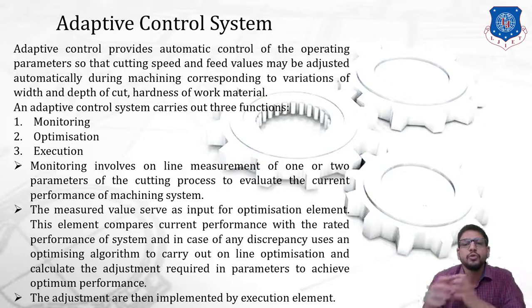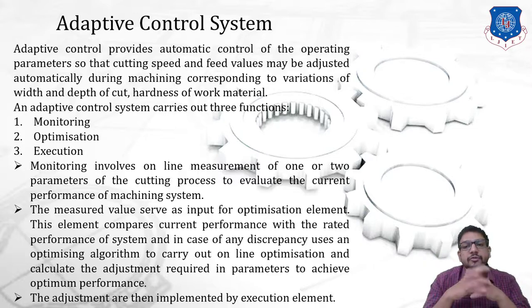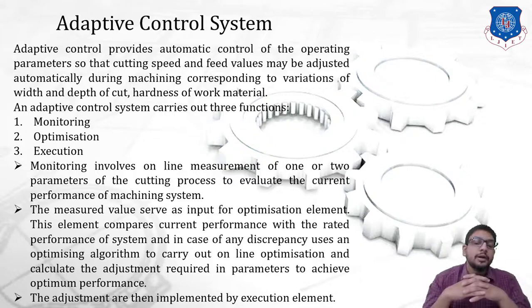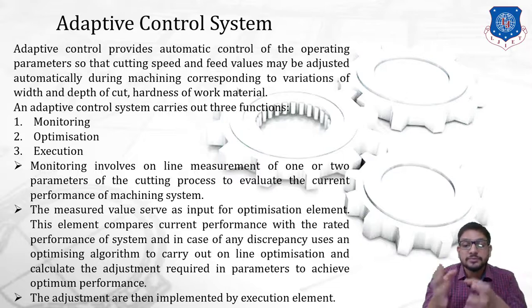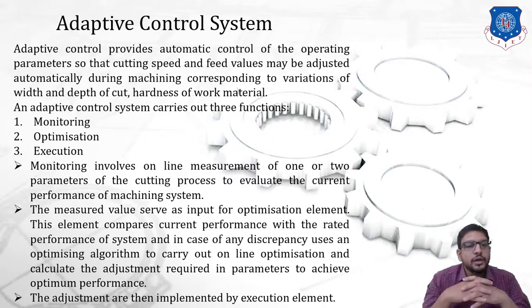The optimization element compares the current performance with the rated performance of the system. In case of any change, it uses the optimizing algorithm to carry out online optimization and calculate the adjustments required in parameters — that is, speed and depth of cut — to achieve optimum performance. Accordingly, if there is any change compared to rated performance, the control system automatically adapts the most suitable values of these parameters to achieve performance nearer to the rated optimum. The optimization element is essentially a software element, while monitoring is a hardware element.